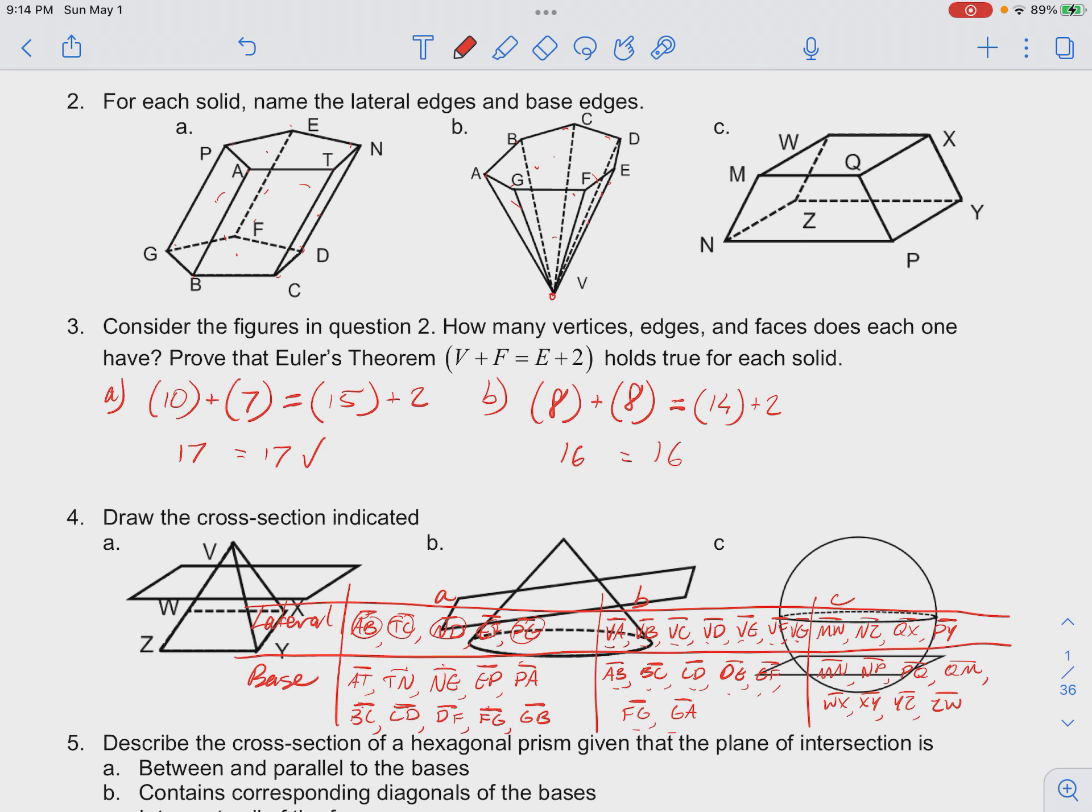And for part C, we have for our vertices: 1, 2, 3, 4 vertices at the front and 1, 2, 3, 4 vertices at the back, so we have 8 in total. Plus we have 1 face at the front, 1 face at the back, plus 4 around, so we have 6 faces.